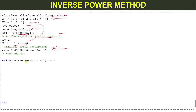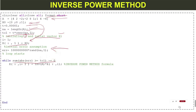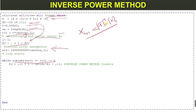We start a while loop; the loop continues as long as the condition is true, incrementing the number of iterations. Inside the loop, we apply the inverse power method formula: x(i+1) = A_inverse * x(i), multiplying the inverse of matrix A by the current vector x.